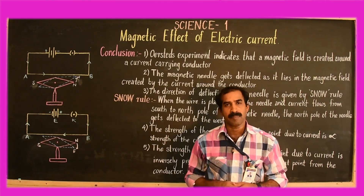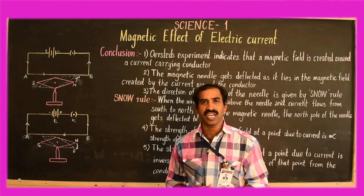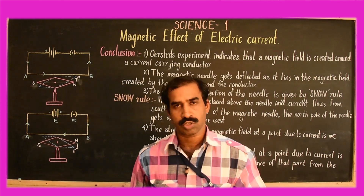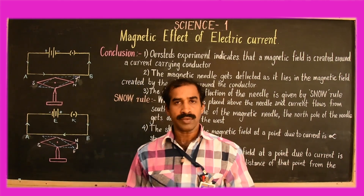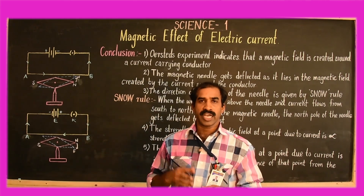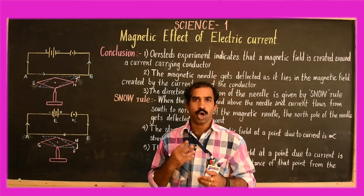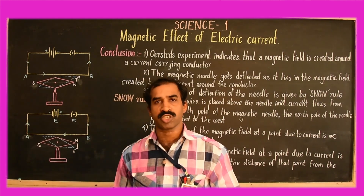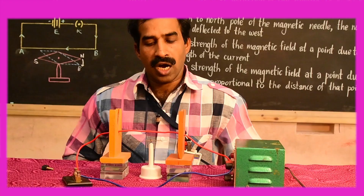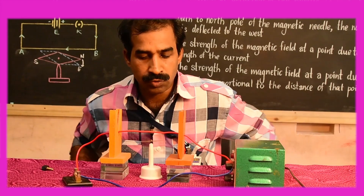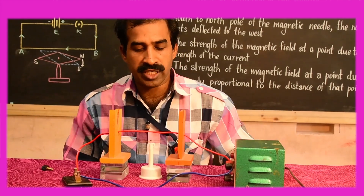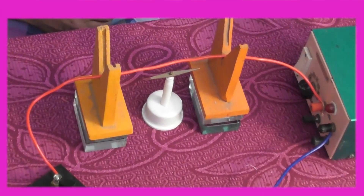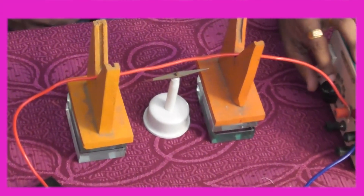Through his experiment he proved that when current is passed through a conductor, a magnetic field is created around the conductor. So today let's see the experimental procedure, observations, and results of Oersted's experiment.